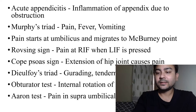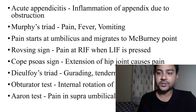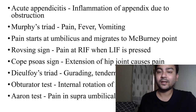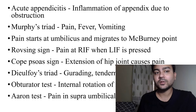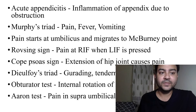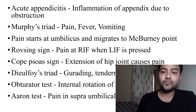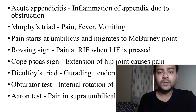Appendicitis is an inflammation of the appendix, mostly due to obstruction. Obstruction can be due to a fecalith, which is the most common cause, or due to a foreign body or worm infestation. There is a famous triad in appendicitis known as Murphy's triad: fever, pain in the right iliac fossa, and vomiting.